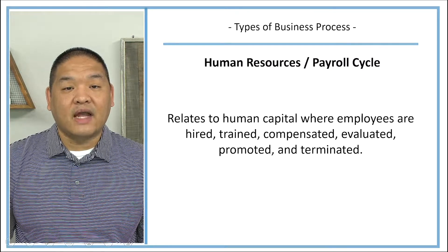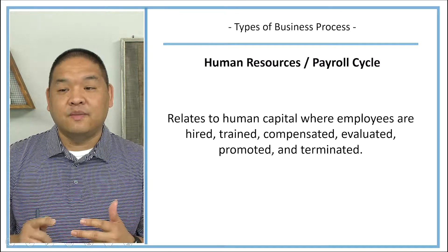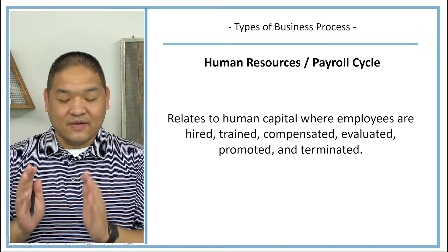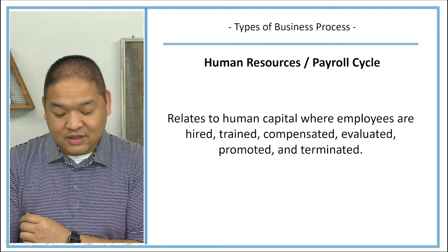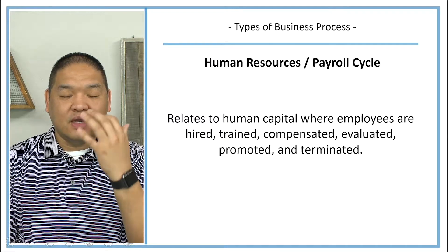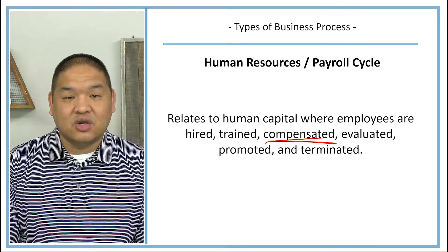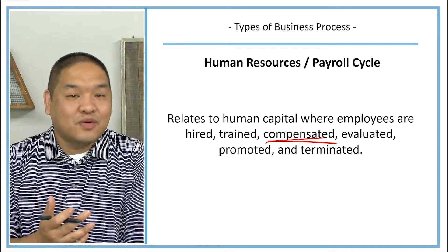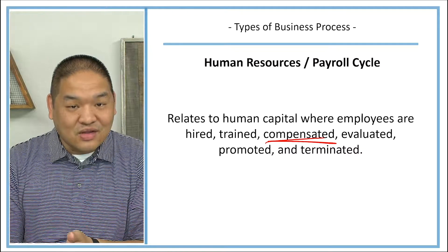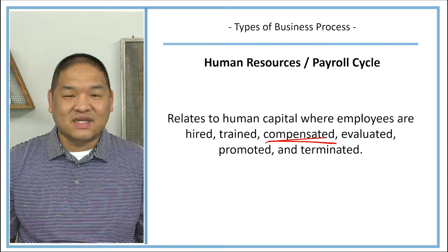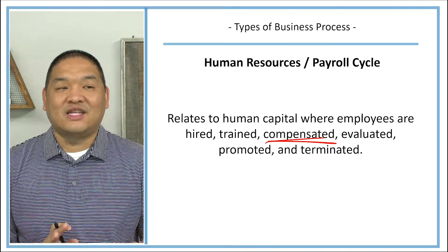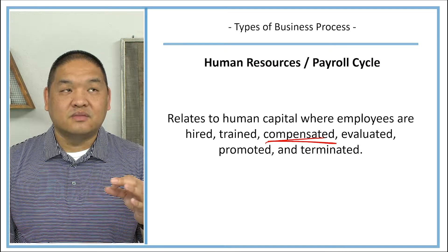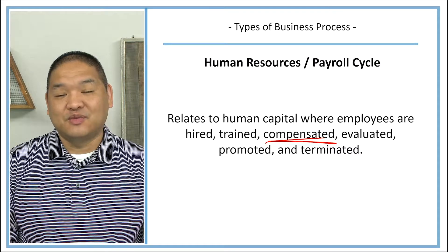The human resources or payroll cycle is where all labor comes from — whether operational, manufacturing, or cost-of-goods-sold related. It relates to human capital: employees are hired, trained, compensated, evaluated, promoted, and terminated. You might wonder why compensation isn't in the expenditure cycle — it's because managing employees is more complex than paying for supplies. Payroll itself involves many deductions and calculations to ensure employees receive accurate pay.